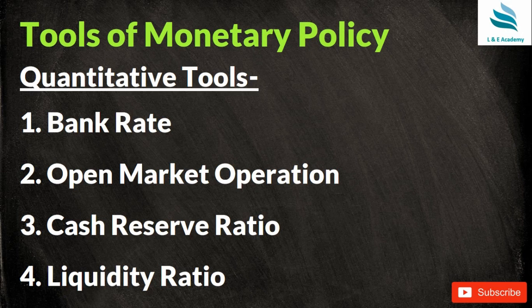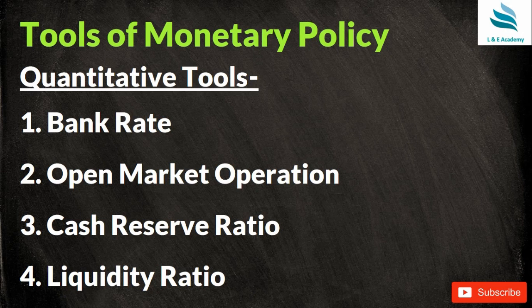The second quantitative tool used by RBI is open market operations — the purchase and sale of government securities by RBI. If there is high inflation with too much money in the market, RBI will sell government securities. People will buy these securities from RBI, so the money supply in the market decreases — money comes into the hands of RBI — and inflation is controlled.